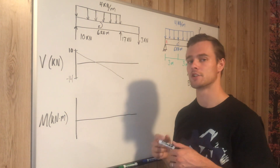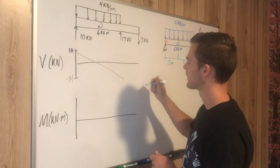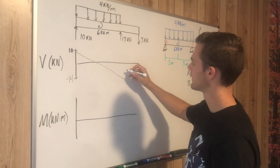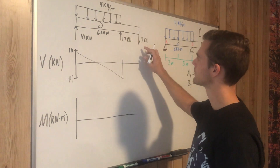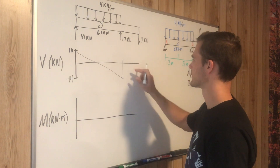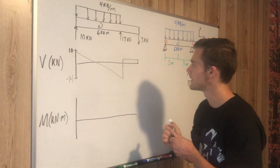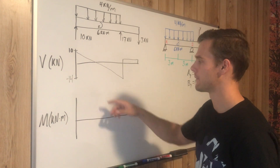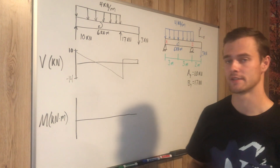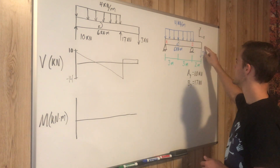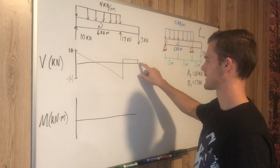Note that the point moment does not affect the shear diagram. The 17 kilonewton reaction at B pops the shear back up by 17: negative 14 plus 17 equals positive 3. From that point to the three kilonewton end load there are no forces, so the shear stays flat at 3. The three kilonewton point load drops it back down to zero, which confirms our work — all forces balance and the shear returns to zero at the free end.